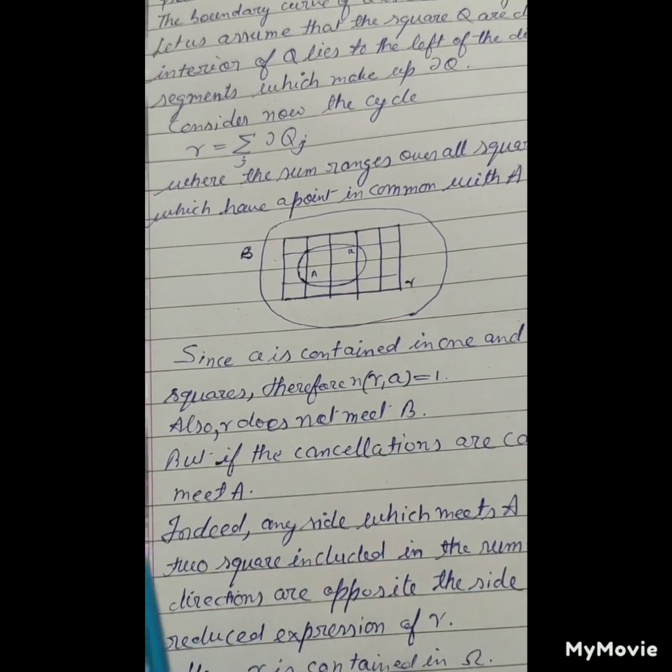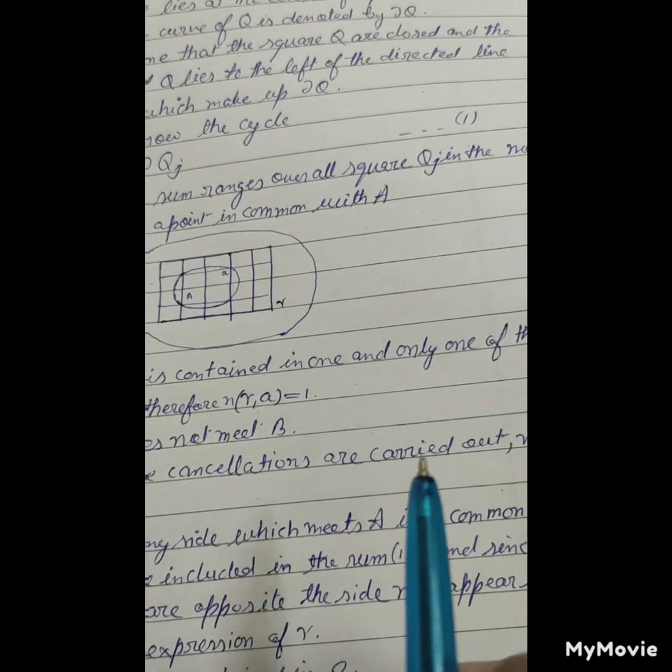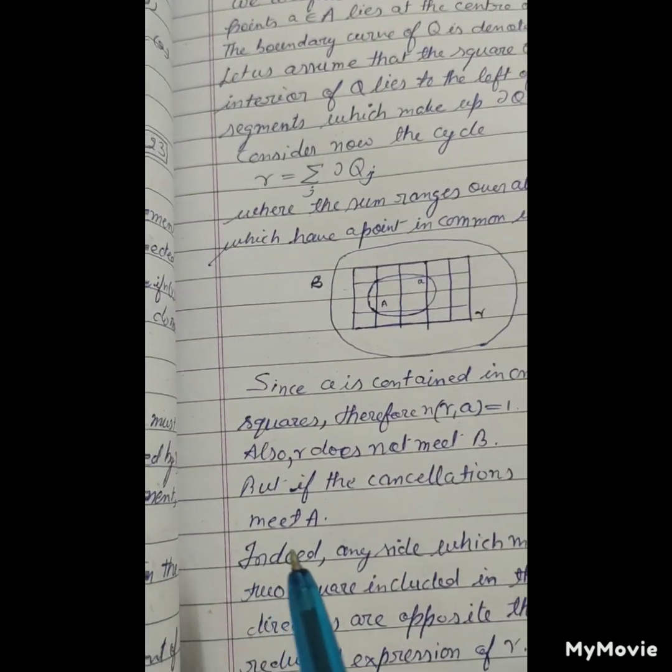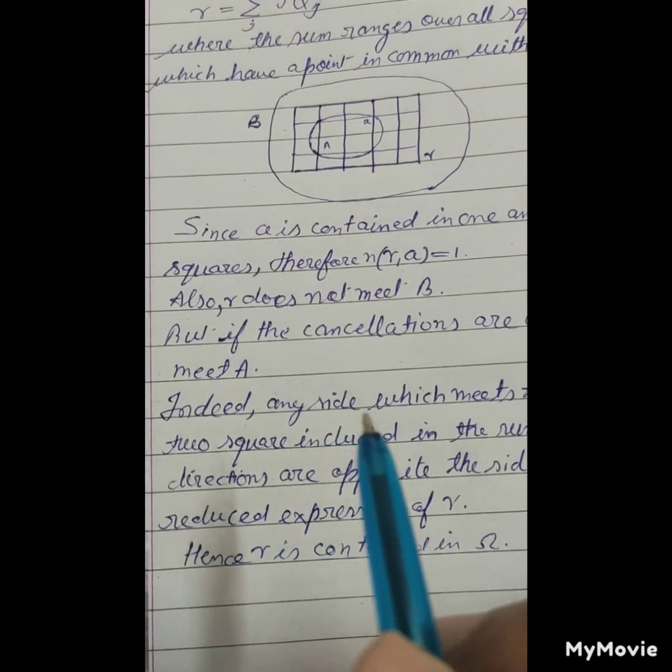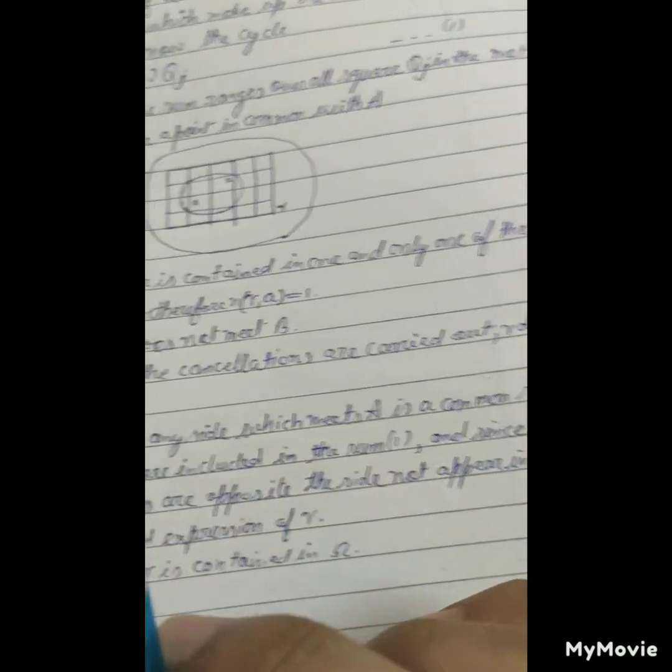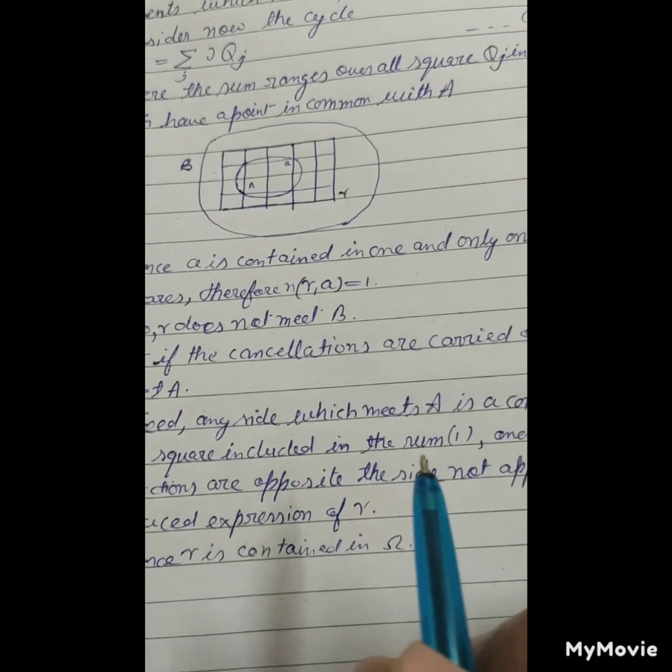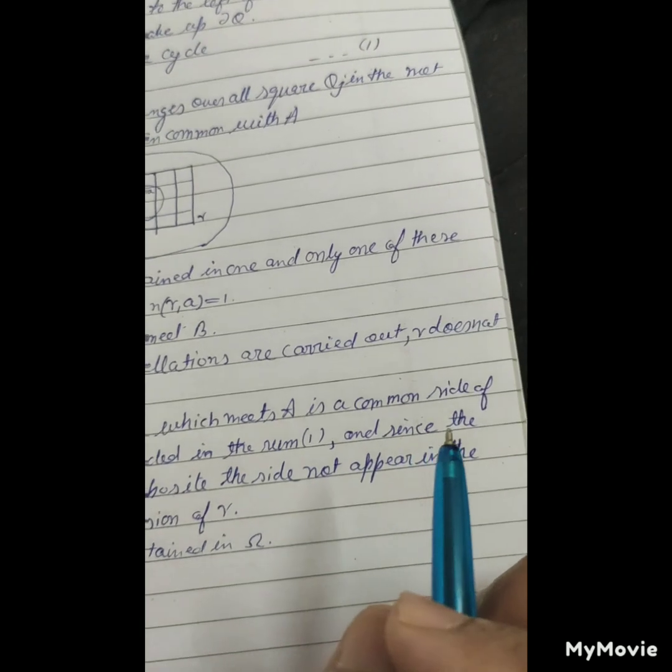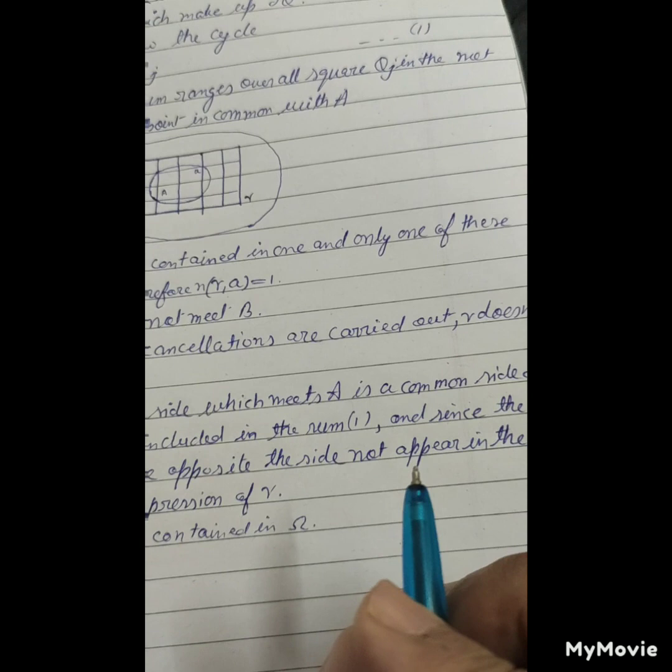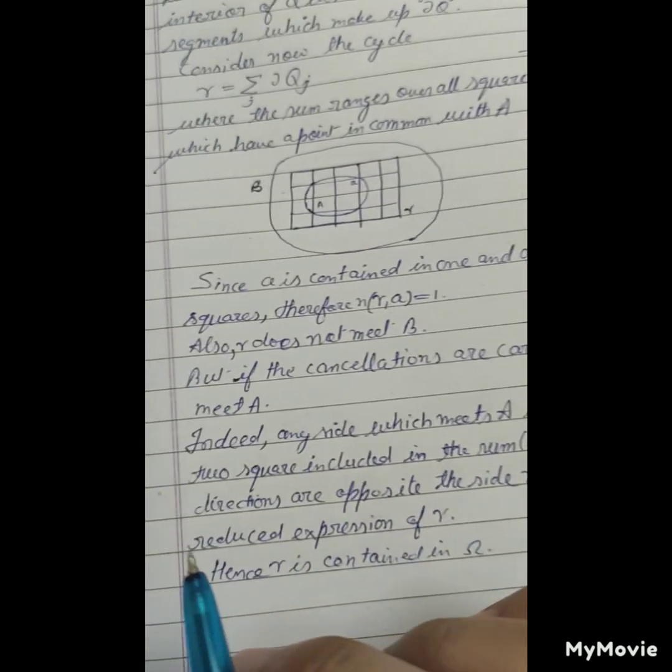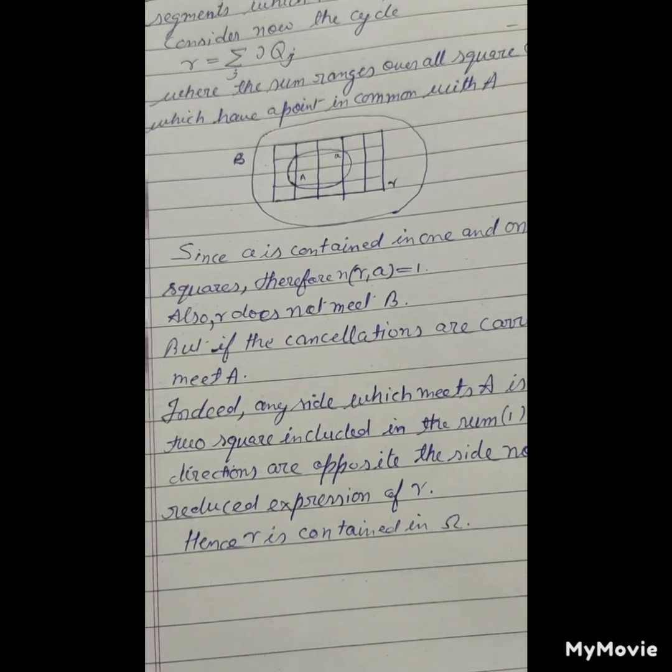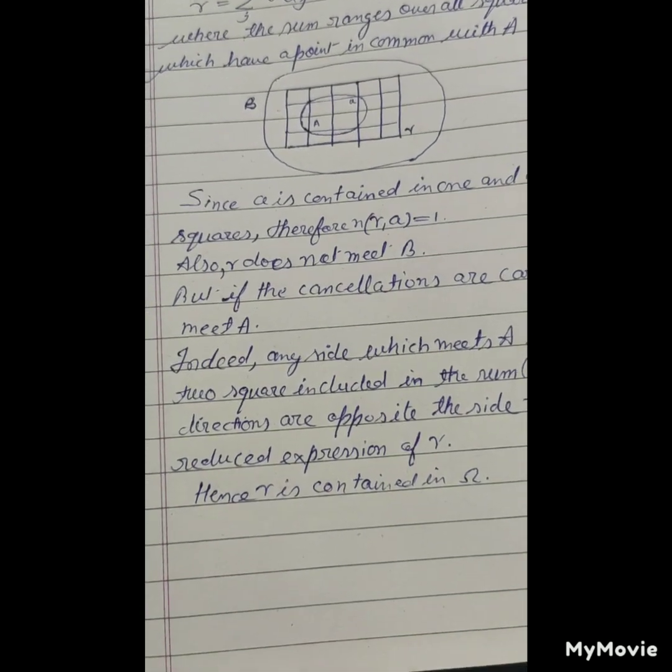Also gamma does not meet B, but the cancellations are carried out. Gamma does not meet A indeed. Any side which meets A is a common side of two squares included in the sum, and since the directions are opposite, that side does not appear in the reduced expression of gamma. Hence gamma is contained in omega.